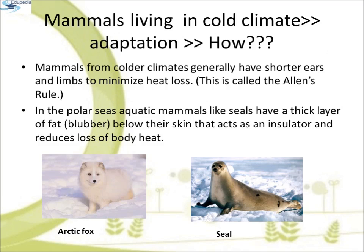How do mammals living in cold climates adjust to extreme cold conditions? Mammals from colder climates generally have shorter ears and limbs to minimize heat loss — this is called Allen's rule. In the polar seas, aquatic mammals like seals have a thick layer of fat below their skin that acts as an insulator and reduces the loss of body heat. You can see the picture of an arctic hare, which has small ears and limbs, and seals which have a thick layer of fat below their skin.